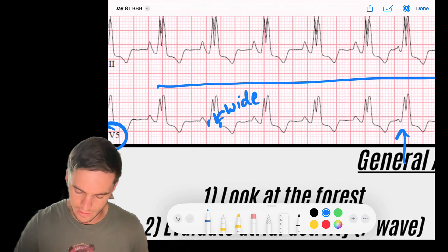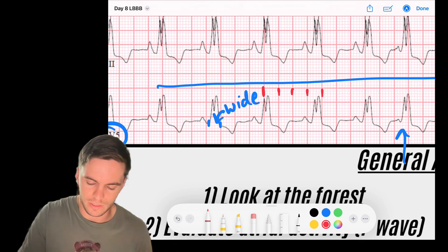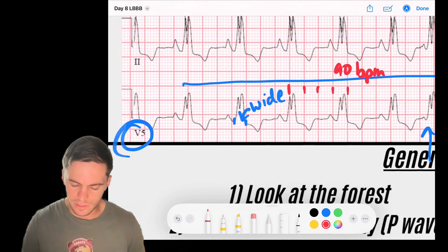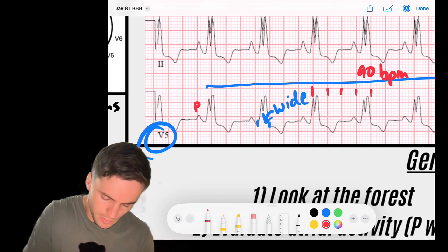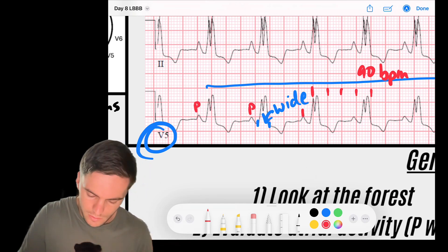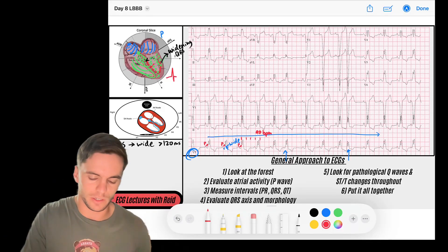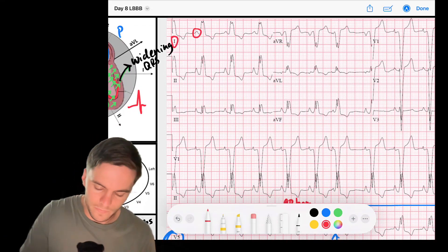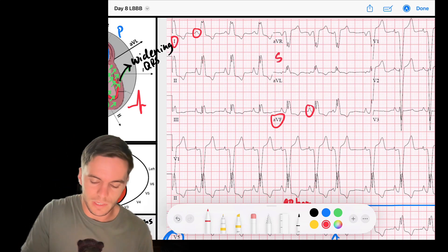And this wide complex rhythm is occurring at a rate of roughly, say this QRS lands here, 300, 150, 100, 75, somewhere between 75 and 100. I'm going to call this 90 beats per minute. So we have a wide complex QRS, and I noticed that before all of my wide complex QRSs, I have these P waves. So it seems like there are P waves that are driving this rhythm. So if I remember we evaluate our sinus P waves by looking for P waves that are upright in lead one and are upright in AVF. And that tells me that my P waves are going down to the left and that's a sinus P wave.